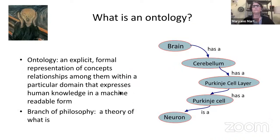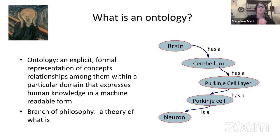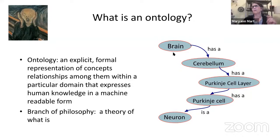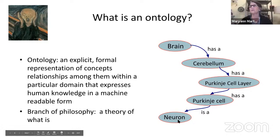By way of introduction: what is an ontology? In its formal definition, an ontology is an explicit, formal representation of concepts and relationships among them within a particular domain that express human knowledge in a machine-readable form. In philosophy, however, an ontology is a theory of what is. One of the themes of this talk is the clash between that philosophical definition and an experimental science like neuroscience, where we don't know what is — we're still trying to find out. You can see a simple example on the right: brain has a part called a cerebellum, it has a part called a Purkinje cell layer, which has a part called a Purkinje cell, which is a type of neuron.